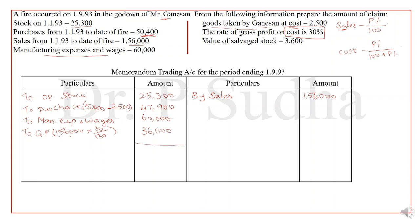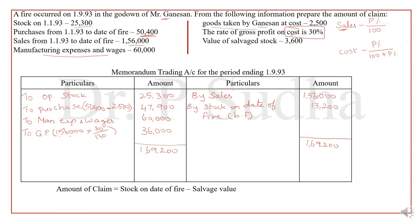Tallying the account, the total is Rs. 1,69,200 on both sides, and the balancing figure is Rs. 13,200 — this is the stock on date of fire. The amount of claim = stock on date of fire − salvage value = 13,200 − 3,600 = Rs. 9,600.